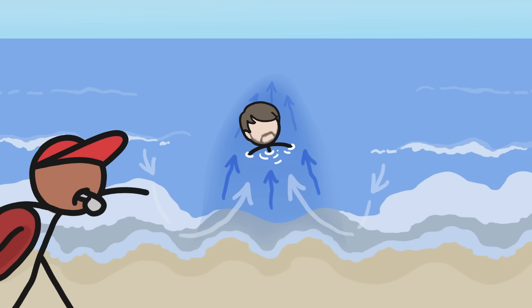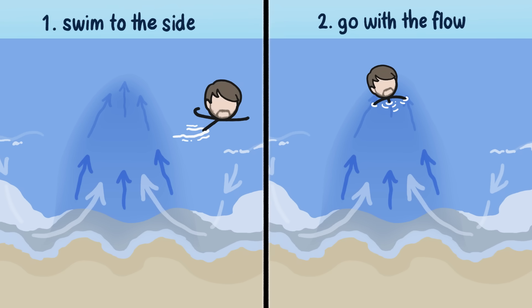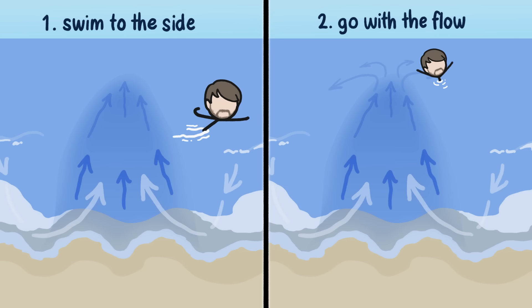Because rip currents are often pretty narrow, one option is to swim parallel to shore and out of the current. But if swimming to one side isn't possible — possibly because of exhaustion — another option is just to let the rip current carry you. Which sounds… terrifying. But rip currents don't run forever out to sea; they tend to fan out as they move away from the beach, so if you can float or tread water long enough, you're likely to meander back into the waves and get pushed to a sandbar, where the water is likely shallow enough to stand.